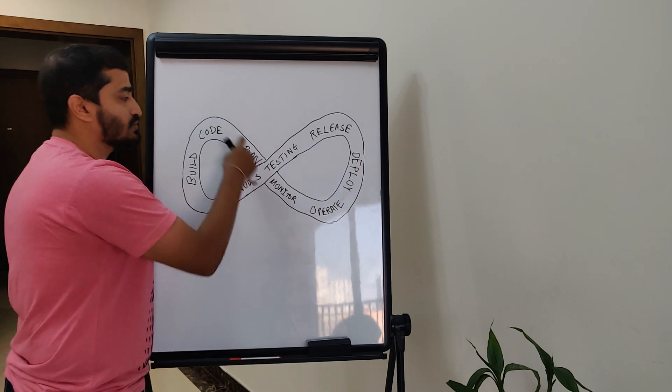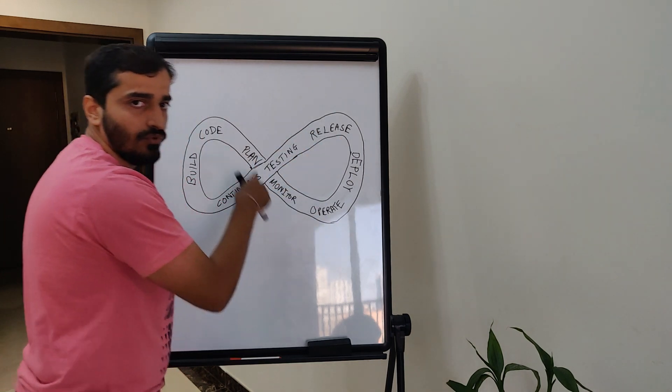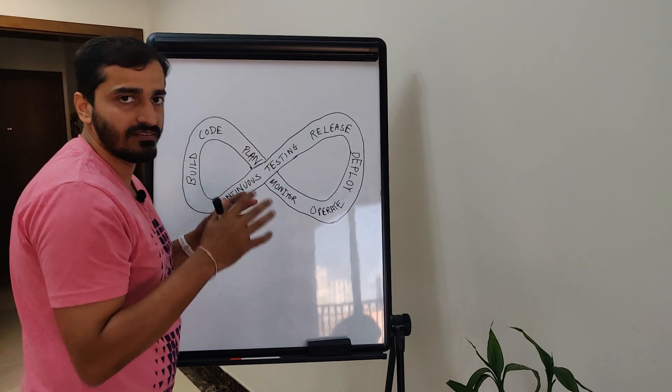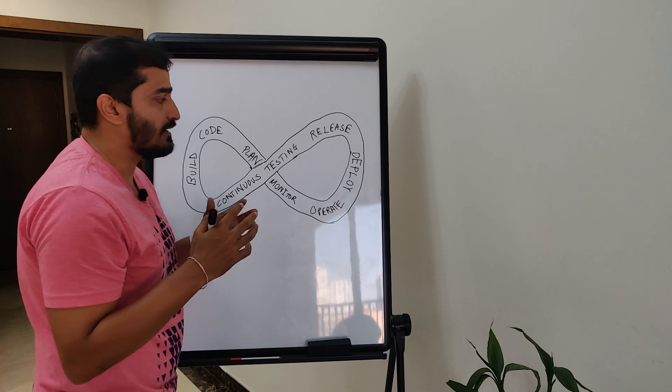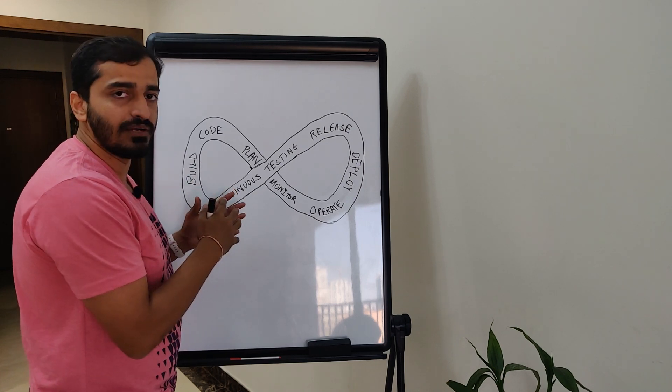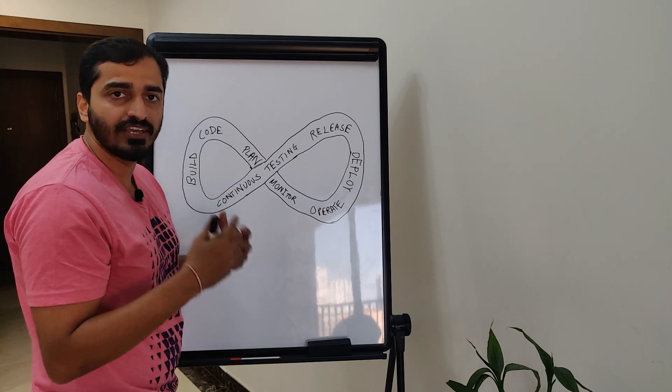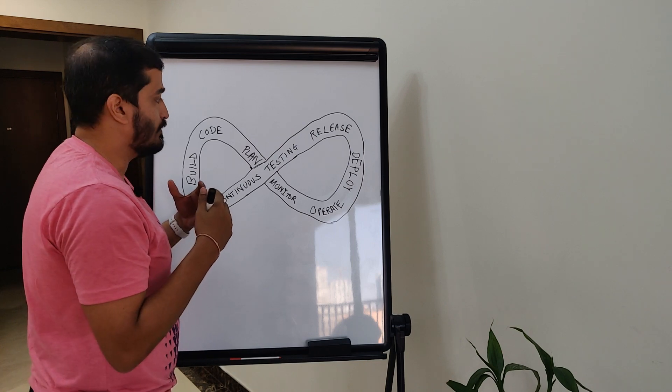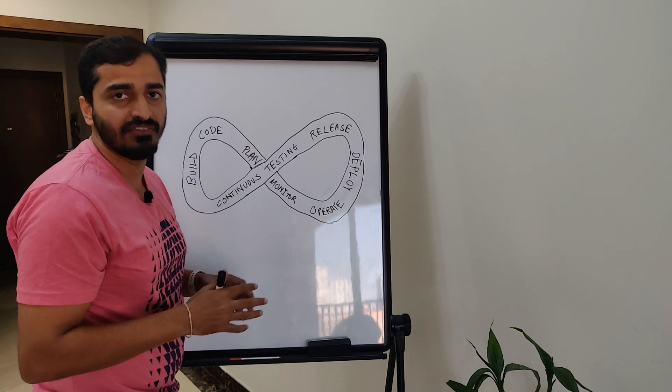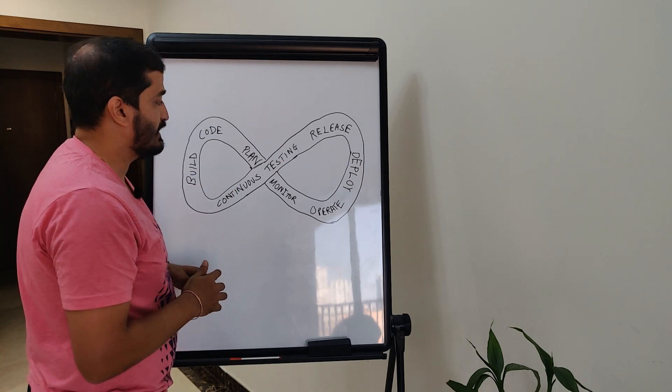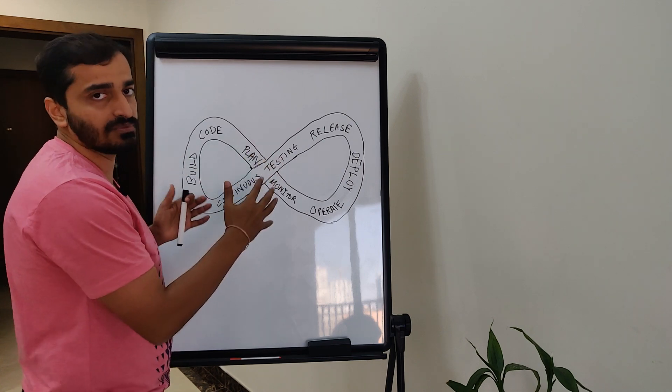But then it doesn't stop there. It goes on in this continuous loop. And that's why this process is essentially infinite. It's supposed to be that way because you have to make sure that you are doing this in the most efficient way possible. And that's where the whole process of DevOps comes into play.